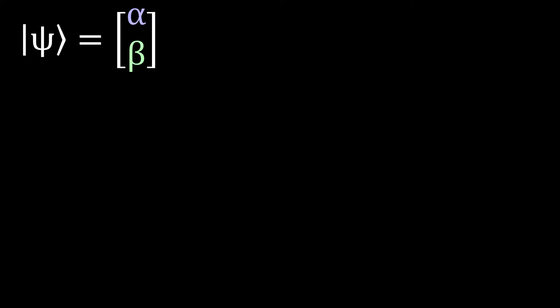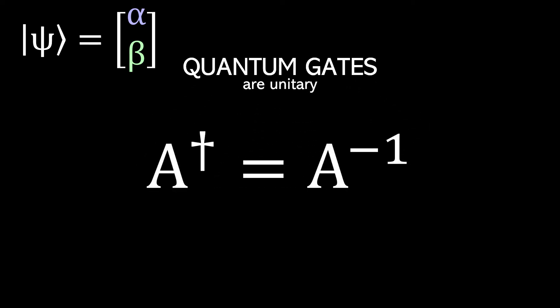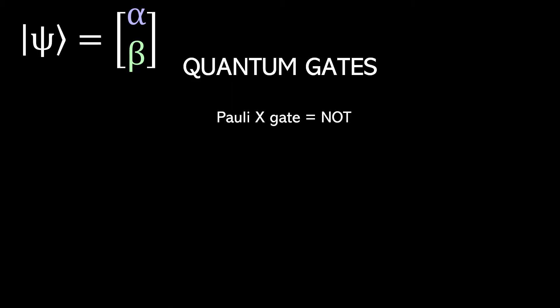Let's talk about quantum gates. What are quantum gates? Quantum gates are matrices, and they are unitary, which means that they have the property that their inverse is the same as their conjugate transpose. This has the interesting side effect that, with the exception of measurement, all quantum operations are reversible.